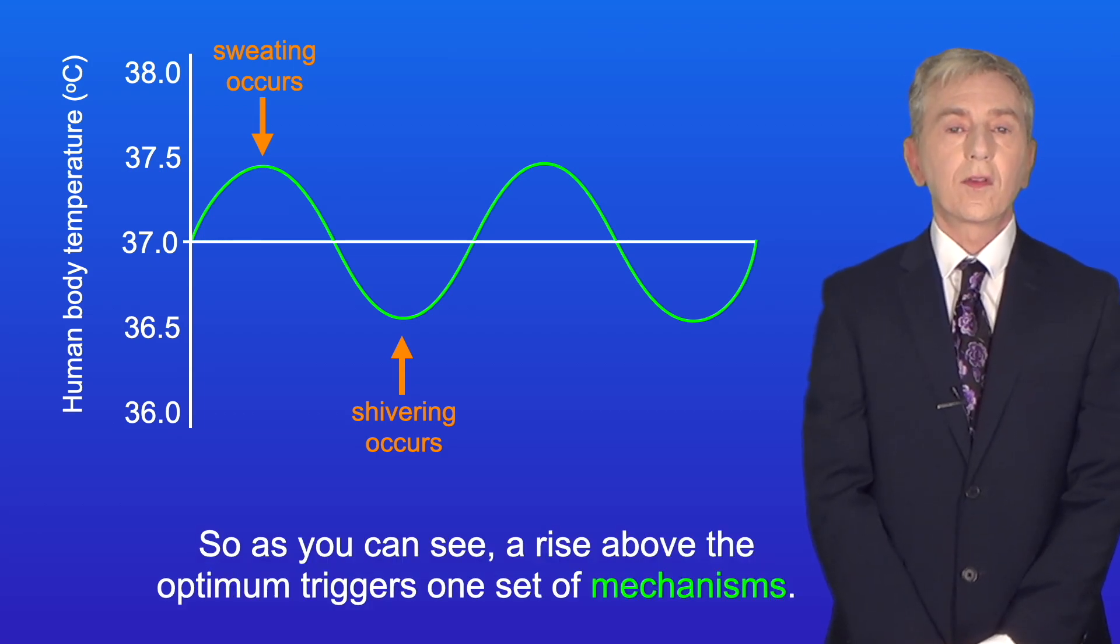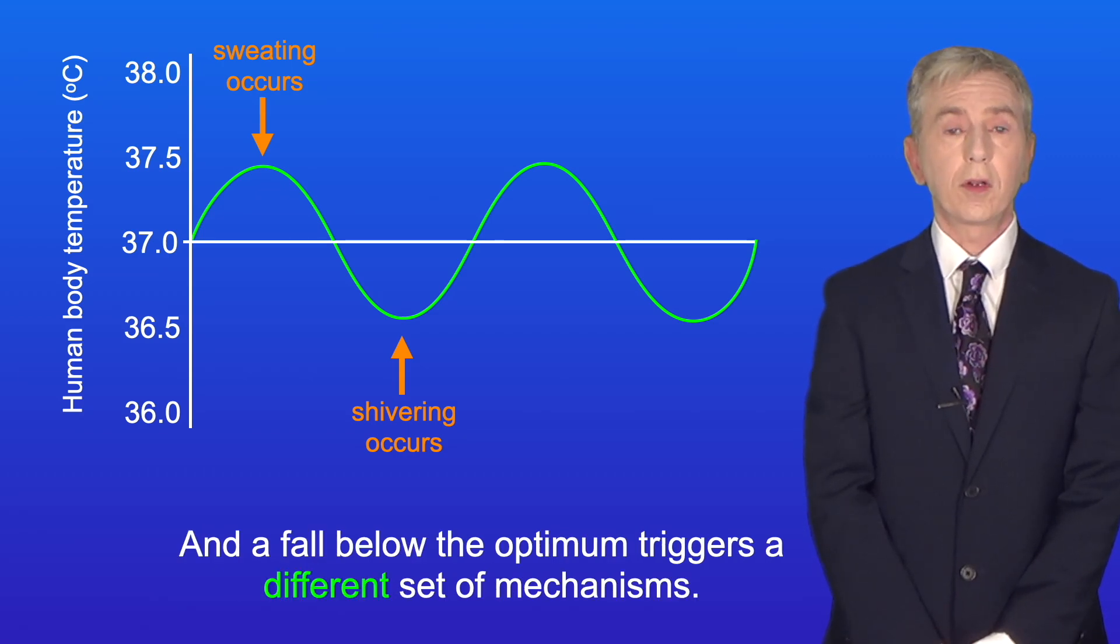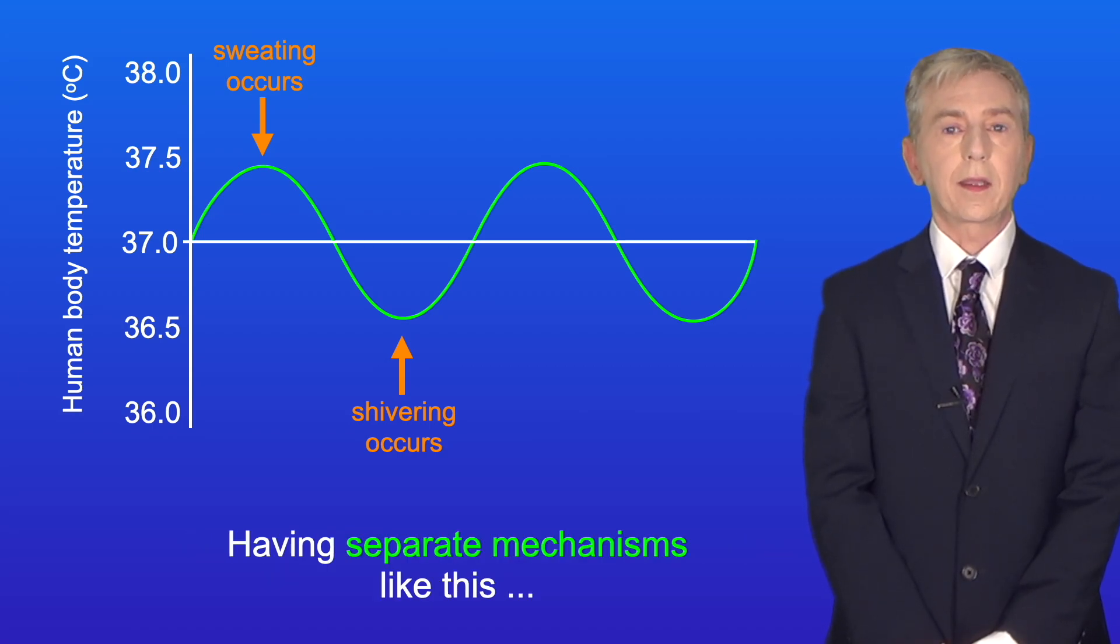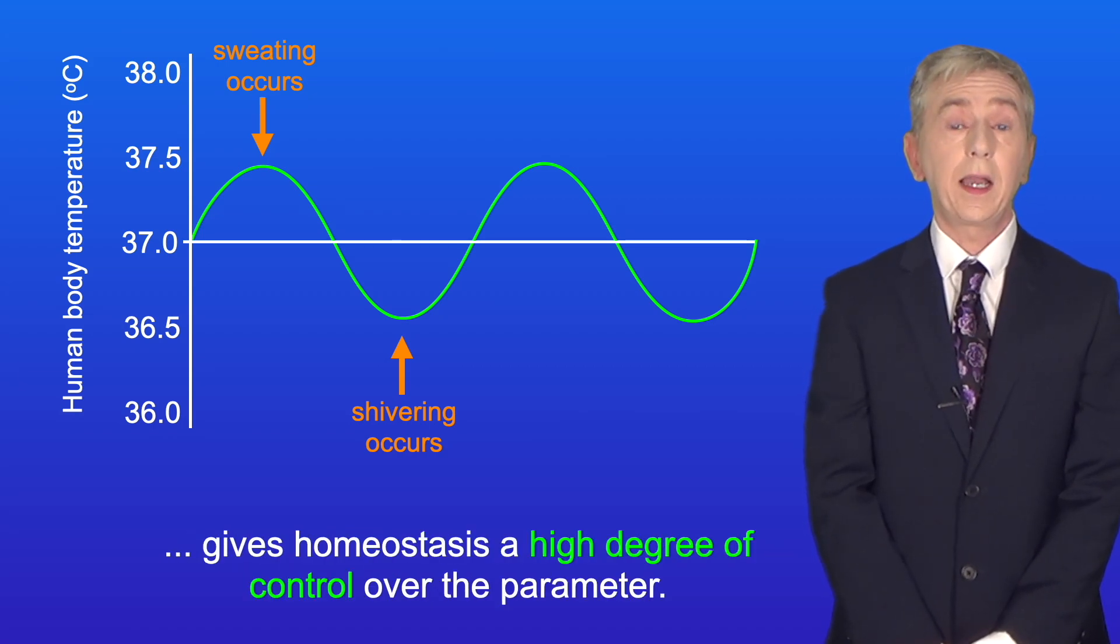So as you can see, a rise above the optimum triggers one set of mechanisms and a fall below the optimum triggers a different set of mechanisms. Having separate mechanisms like this gives homeostasis a high degree of control over the parameter.